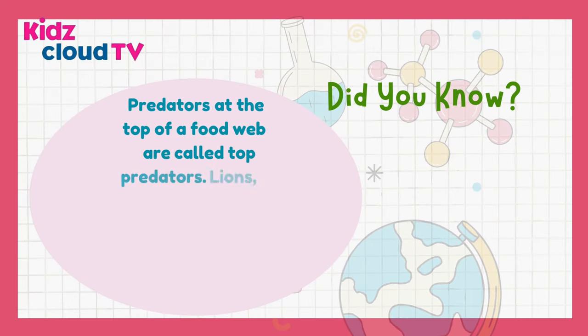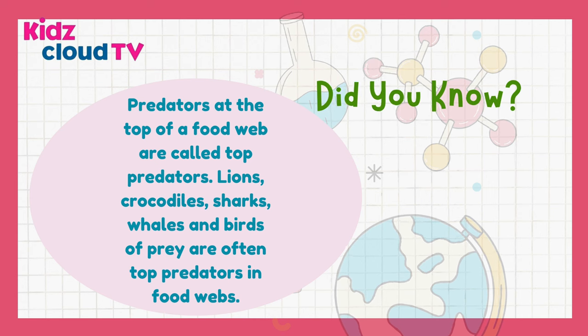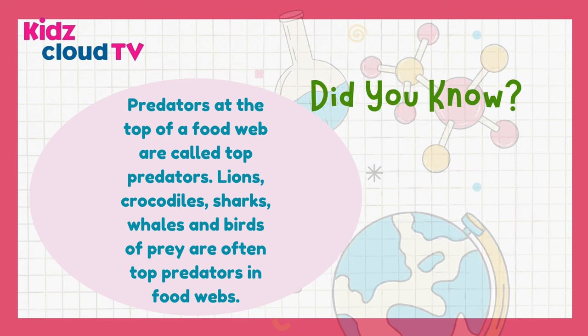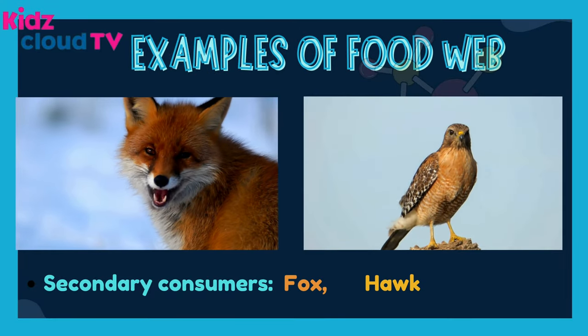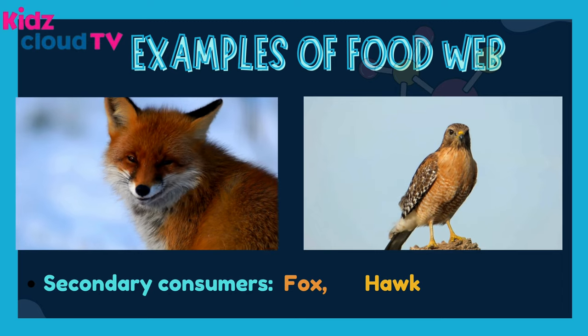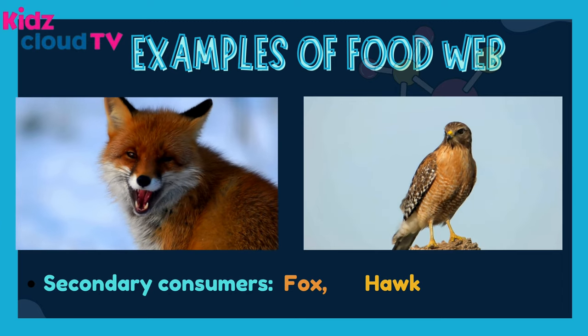Did you know? Predators at the top of a food web are called top predators. Lions, crocodiles, sharks, whales, and birds of prey are often top predators in food webs. Secondary consumers in a food web include fox and hawk.